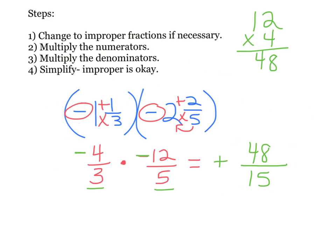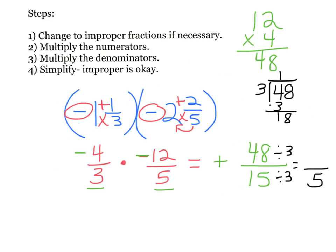My next step is to simplify 48 over 15. I know that 3 goes into both of these, so I'll divide top and bottom by 3. 15 divided by 3 is 5, and 48 divided by 3 is 16. So the result is 16 over 5. Nothing goes into 16 and 5, so that's simplified as much as I can. Remember, you can leave it as an improper fraction — so I'm done with this one.